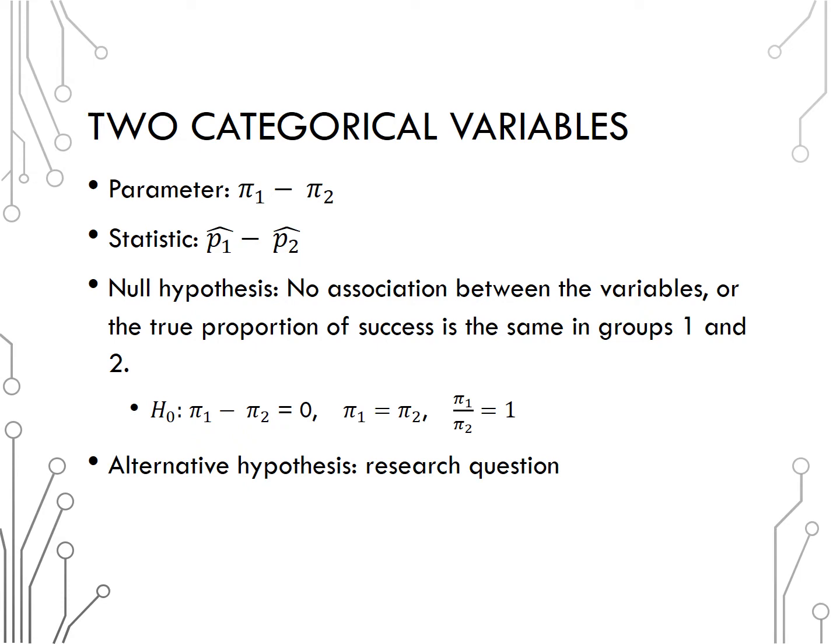The null hypothesis will always be that there is no association between the two variables or that the two conditional proportion of successes are the same. We could write that in three different ways using notation: either that pi 1 minus pi 2 is equal to 0, that pi 1 is equal to pi 2, or that pi 1 divided by pi 2, or the relative risk, is equal to 1.